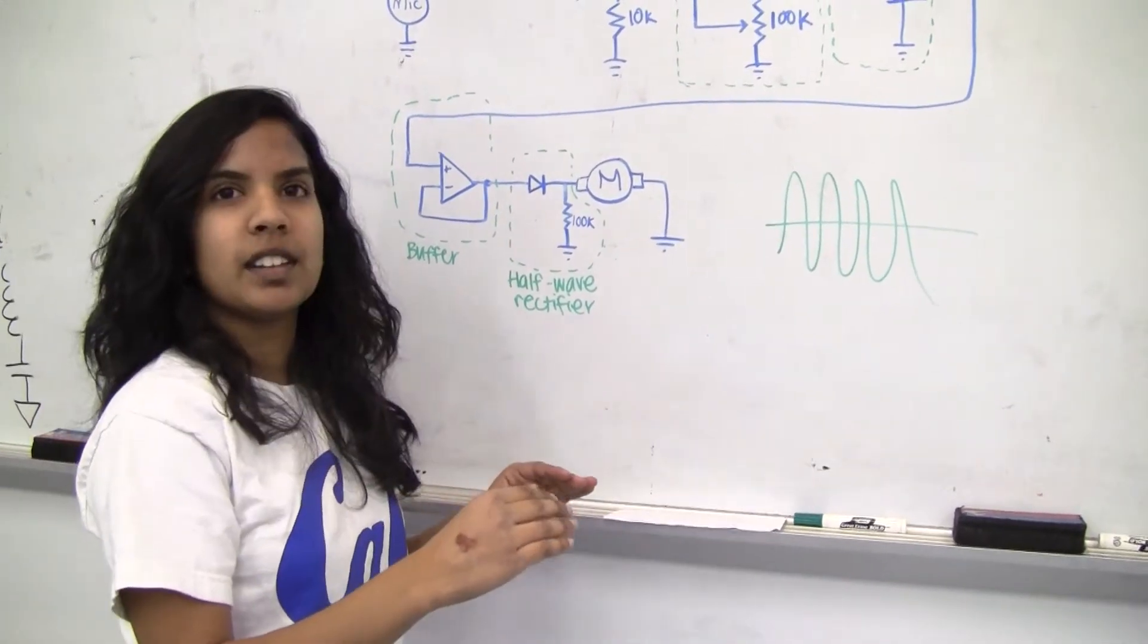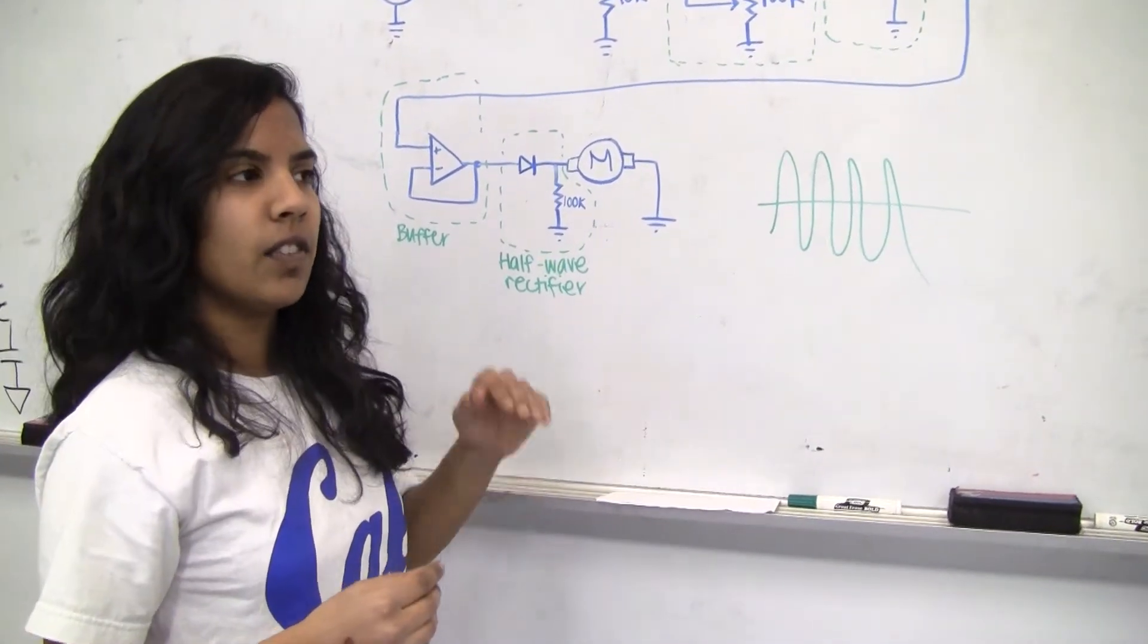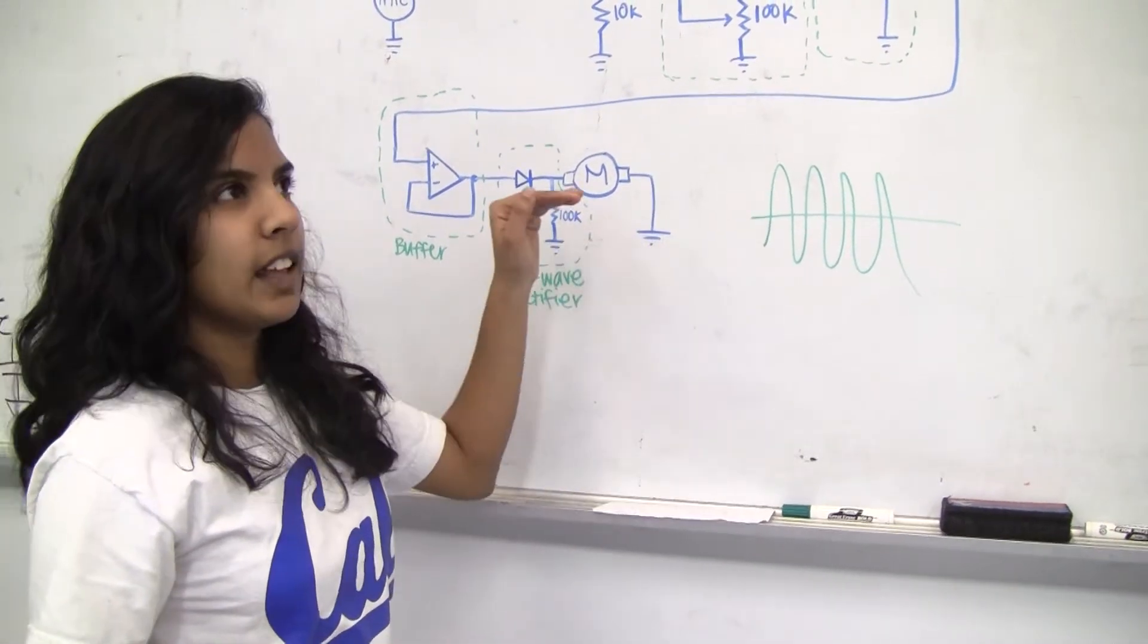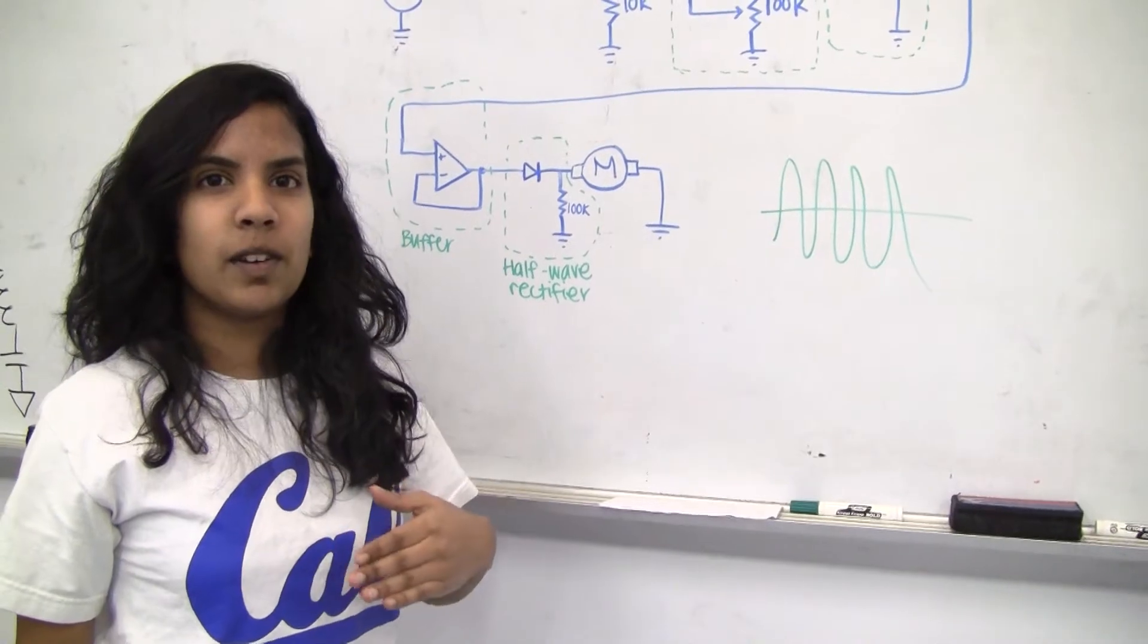The amplitude of the voltage corresponded to the volume of the sound that we were making. That's how we were able to control the motor using the volume of the sound we were making into the mic.